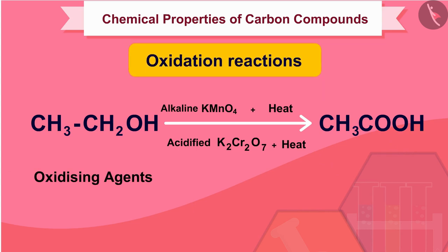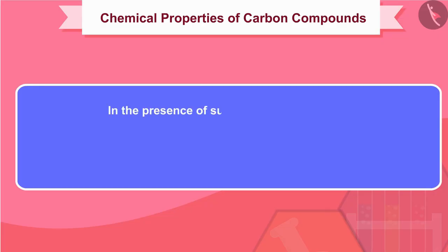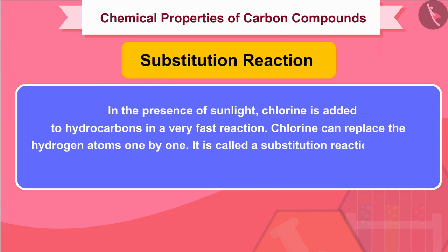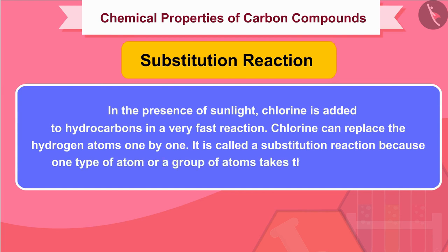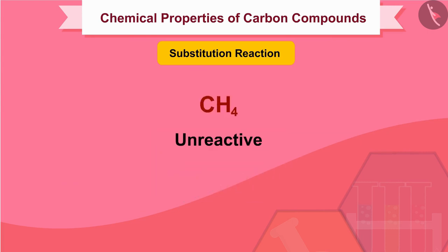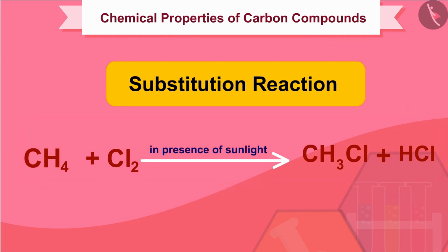Now we know what oxidation is and what oxidizing agents are. Let's move to the next type of reactions. In the presence of sunlight, chlorine is added to hydrocarbons in a very fast reaction. Chlorine can replace the hydrogen atoms one by one. It is called a substitution reaction because one type of atom or group of atoms takes the place of another. Saturated hydrocarbons are quite unreactive and do not react with many substances, but they undergo substitution with chlorine in the presence of sunlight.